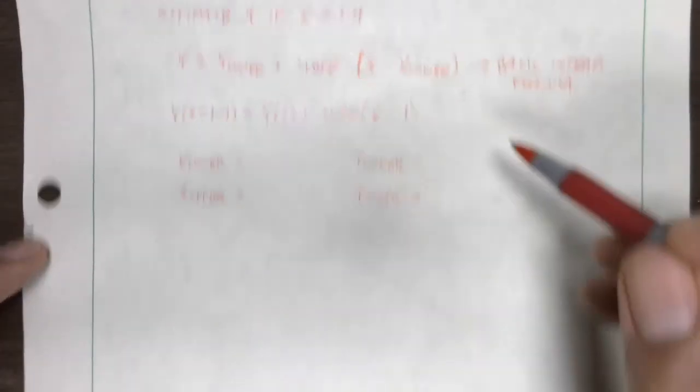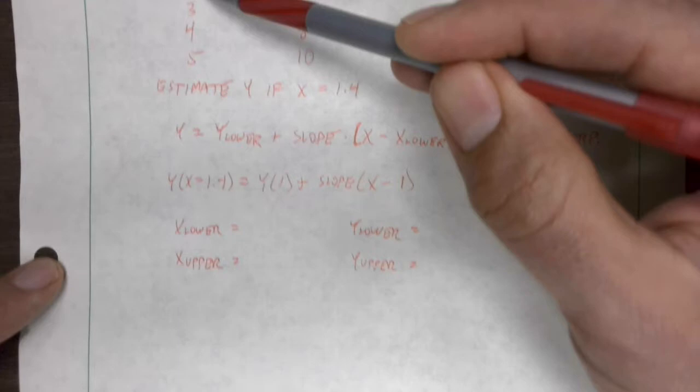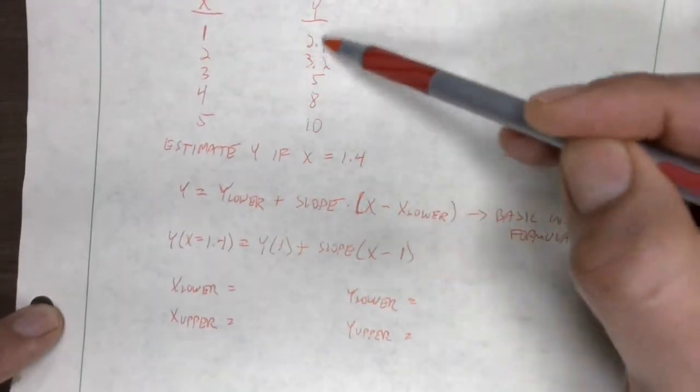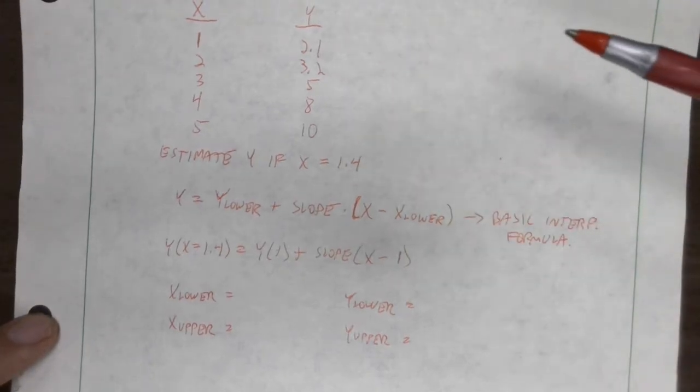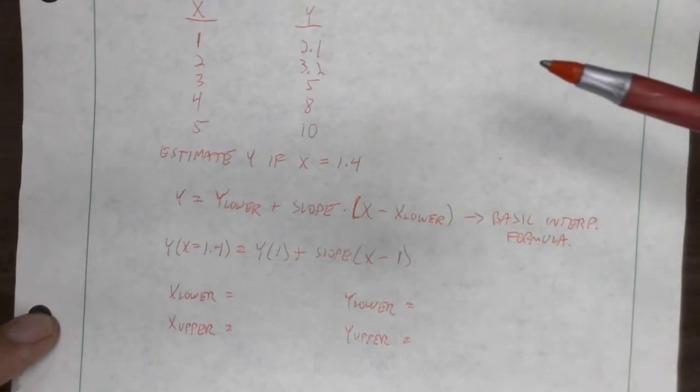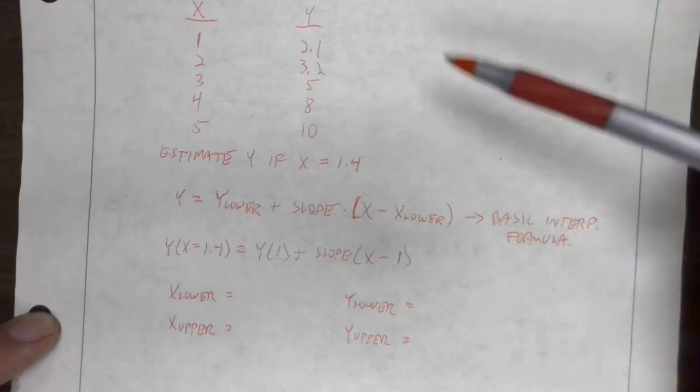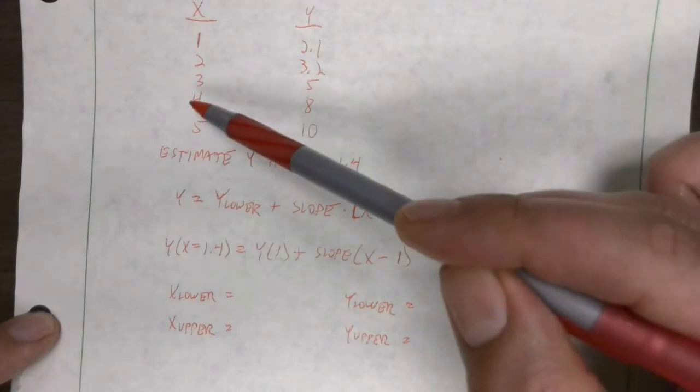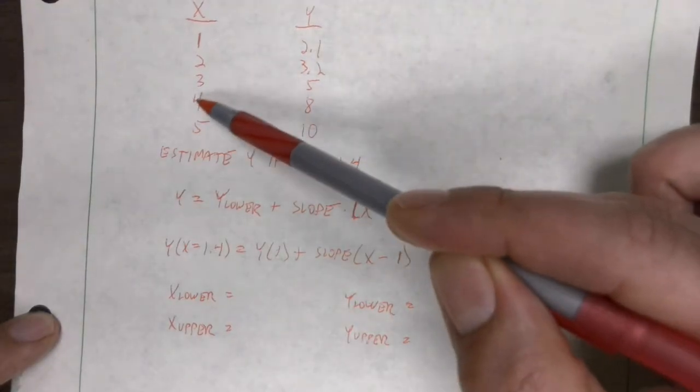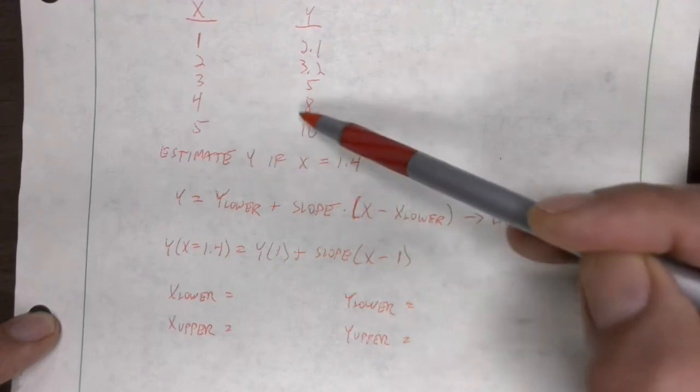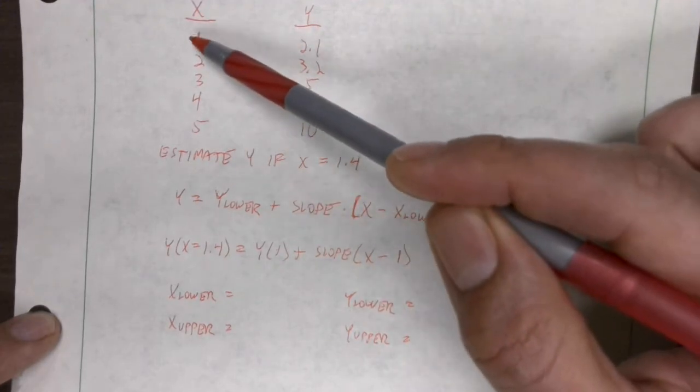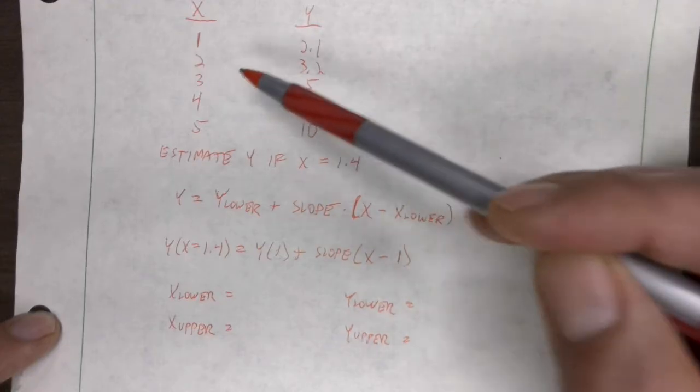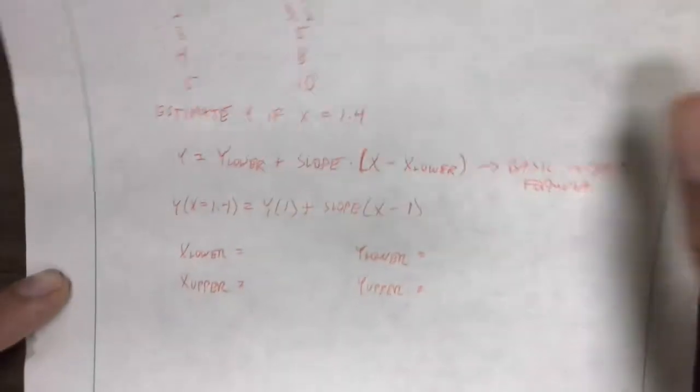If we look at 1.4, that means we're in this part of the table. Now if x was 4.2, which four values would we be using? Stop and think about it. 4.2 is between 4 and 5, so we'd need these two values of x and these two values of y. In this example though, we're up here at the top.